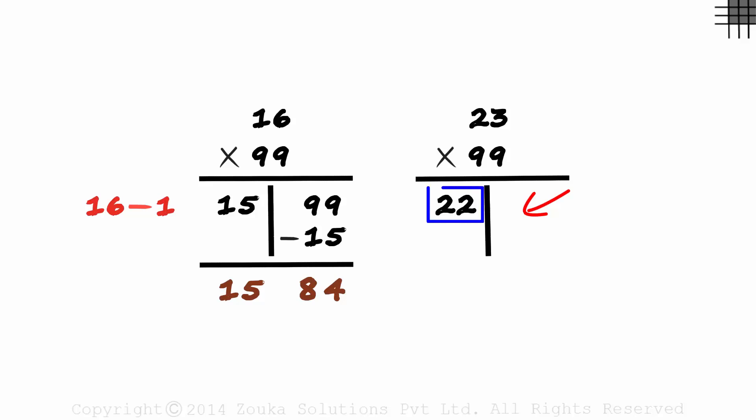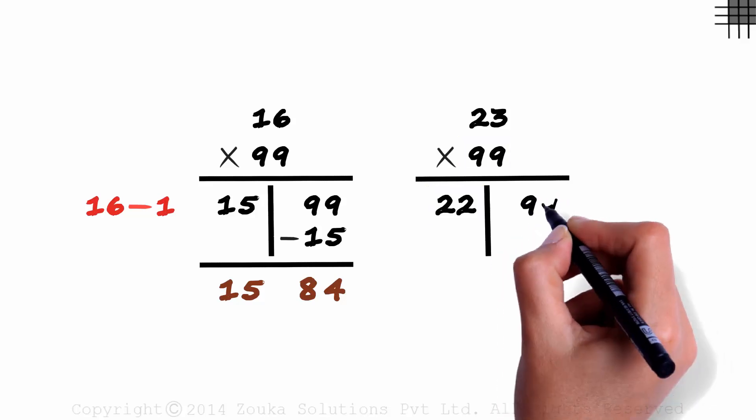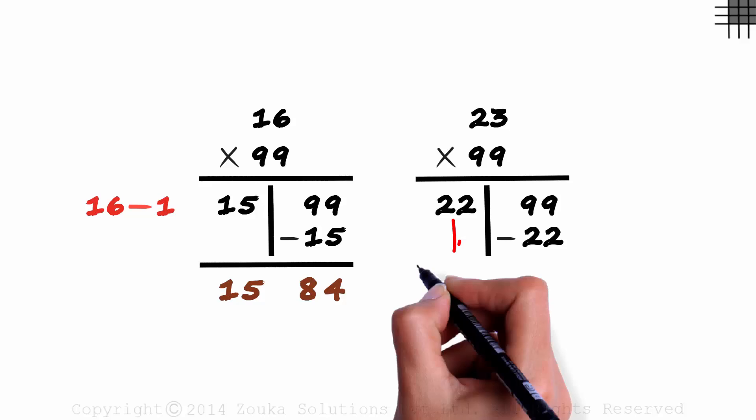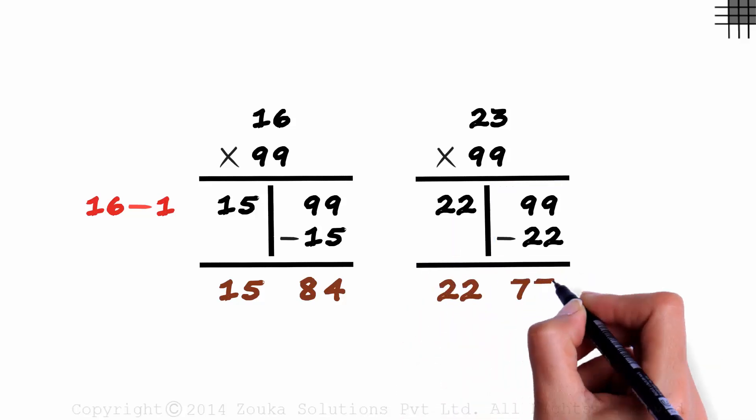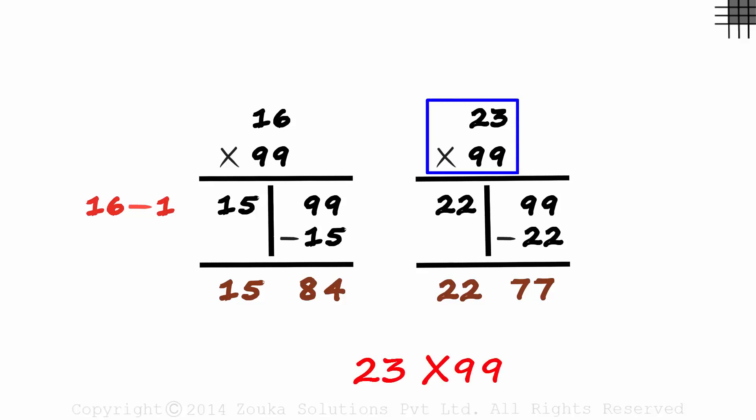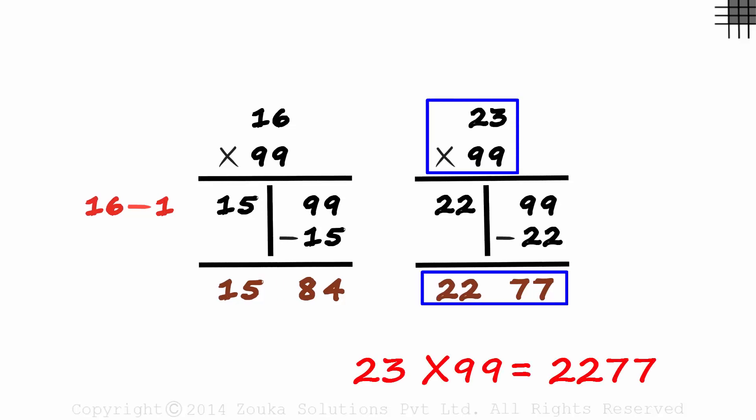And on the right, we subtract this from ninety-nine. Ninety-nine minus twenty-two? Get twenty-two down and ninety-nine minus twenty-two is seventy-seven. Twenty-three times ninety-nine is two thousand two hundred and seventy-seven.